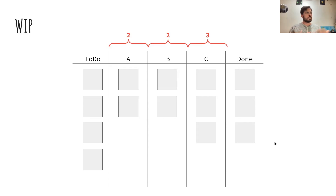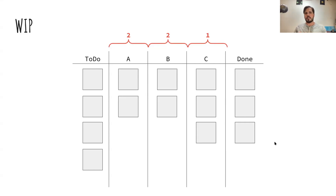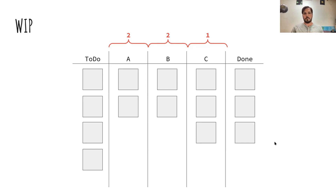WIP limits might look like two things in the first two columns and three in the third. But you might also be violating the WIP limit in one column — you made an agreement about how you'd work and then violated it. Now your WIP is varying, and if we go back to Little's Law, with WIP varying, we don't know what's going to happen to cycle time and throughput.